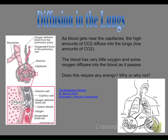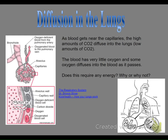Diffusion — we've talked about diffusion. This is an animated version. The blood comes by; it does not have oxygen, it has CO2. CO2 drops off the CO2. There's a bunch of oxygen in the air in the lungs, and it jumps over into the blood as the blood is moving. As blood cells get near the capillaries from the arteries and veins, the high amounts of CO2 diffuse into the lungs where there's a low amount of CO2. The blood has very little oxygen, and some oxygen diffuses into the blood as it passes.